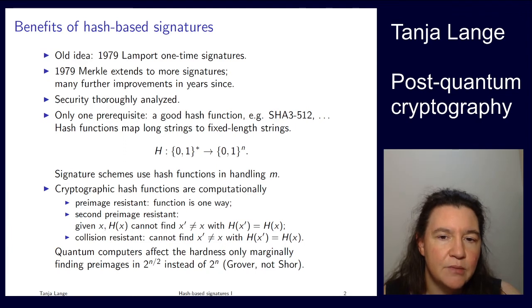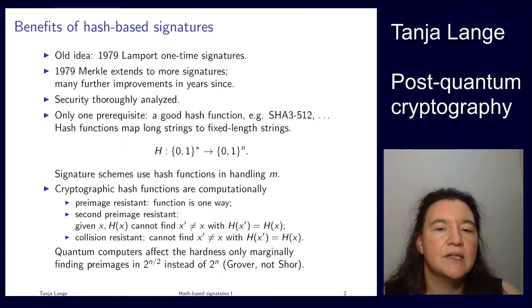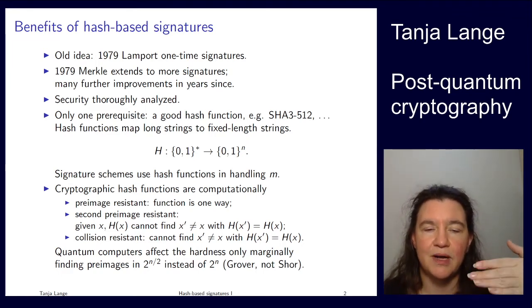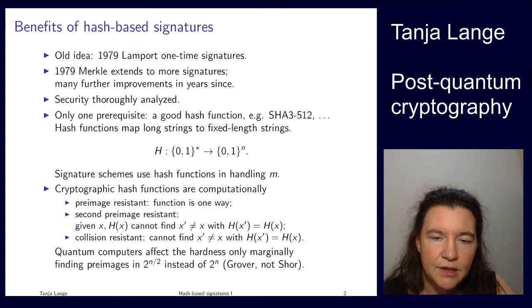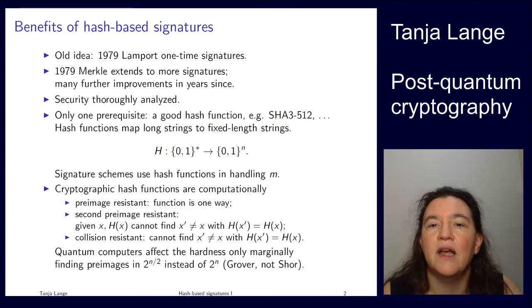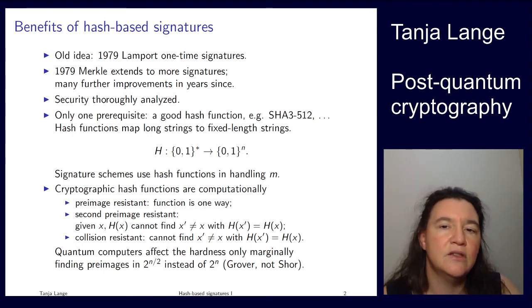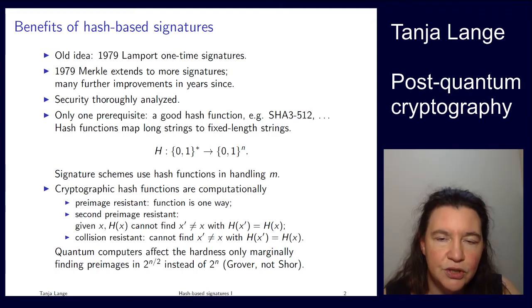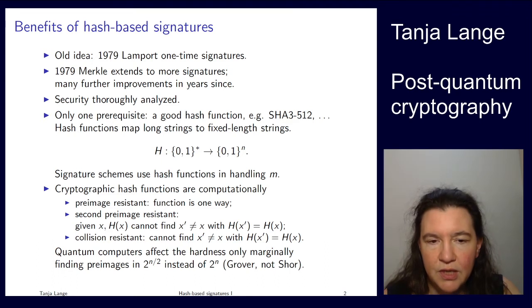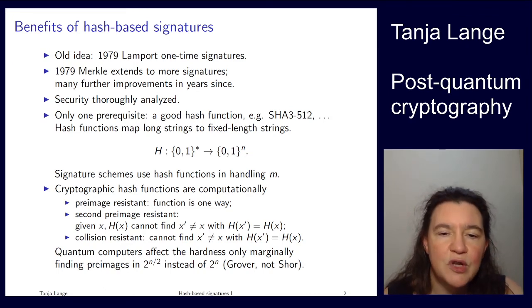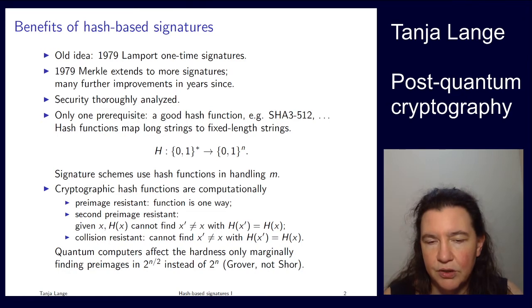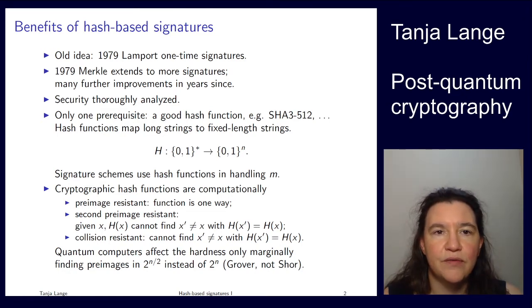If you can compute pre-images or second pre-images, you can typically also find collisions. But the other way around doesn't hold as strongly — collision finding for an n-bit output takes 2^(n/2) without a quantum computer, while pre-images and second pre-images take 2^n. For SHA3-512, n is 512, so finding a collision takes 2^256 operations and finding a pre-image takes 2^512. With a quantum computer, Grover's algorithm gives a square-root speedup on pre-images and second pre-images. There's no way to apply Shor's algorithm here since there's no nice mathematical structure in these functions.